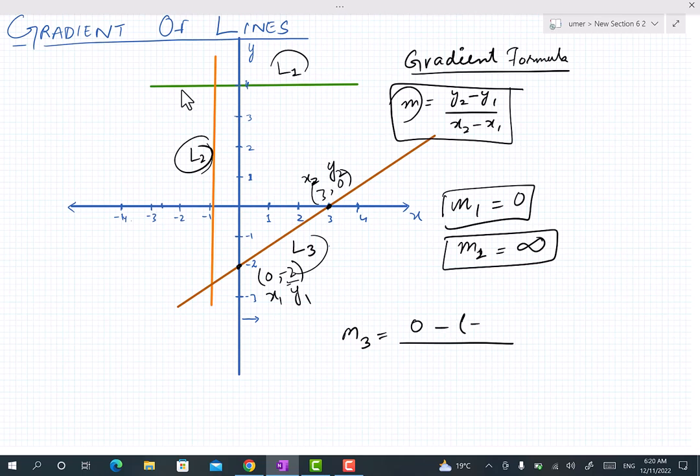Zero minus minus two over x2 minus x1, so x2 is three minus zero, so the answer is minus minus equals plus two over three.